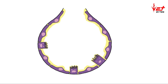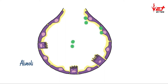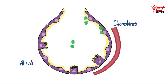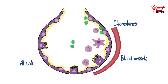When pneumonia-causing bacteria or viruses enter the alveoli, they start to multiply and damage the alveolar epithelial cells. The damaged alveolar epithelial cells produce certain chemicals called chemokines. These chemokines initiate the inflammatory response, causing the movement of inflammatory cells from the blood vessels into the alveoli, and there will be production of exudates inside the alveoli.